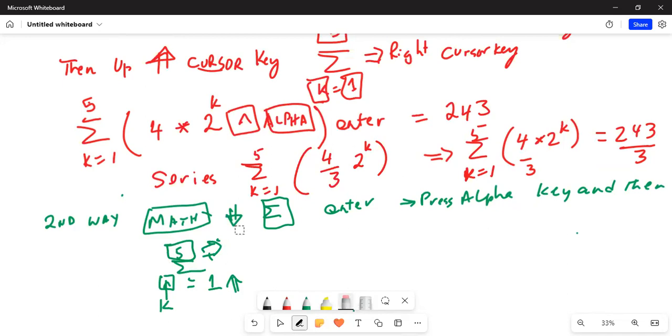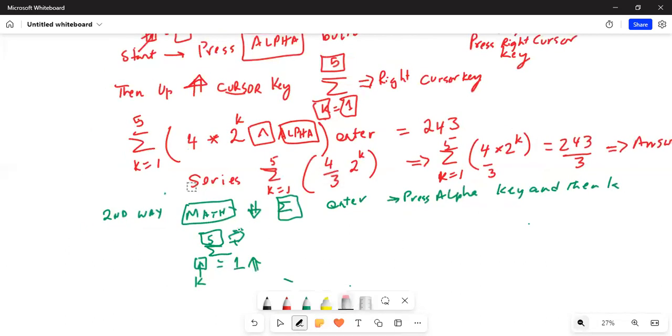After 1 you put the up cursor key to go over in this place, in the final term of the series where you are going to put 5. And then right cursor key. First type 4. I would suggest put another parenthesis, left parenthesis, and then do divided by 3. Put a left parenthesis, inside the left parenthesis 4 divided by 3. Then close the right parenthesis.